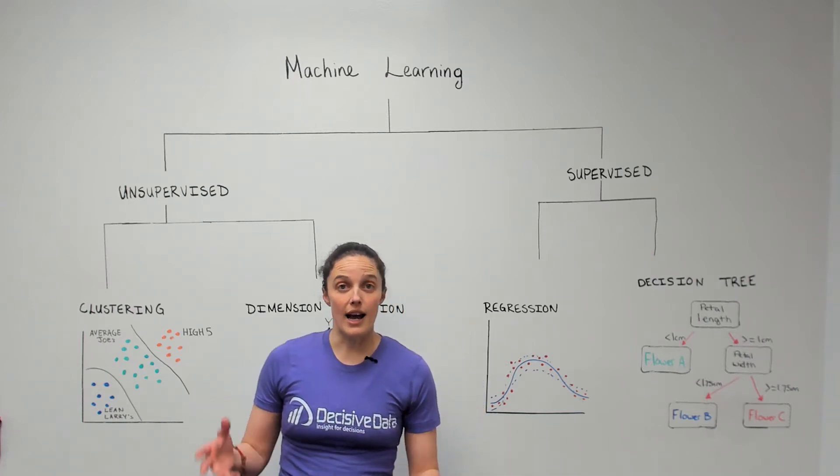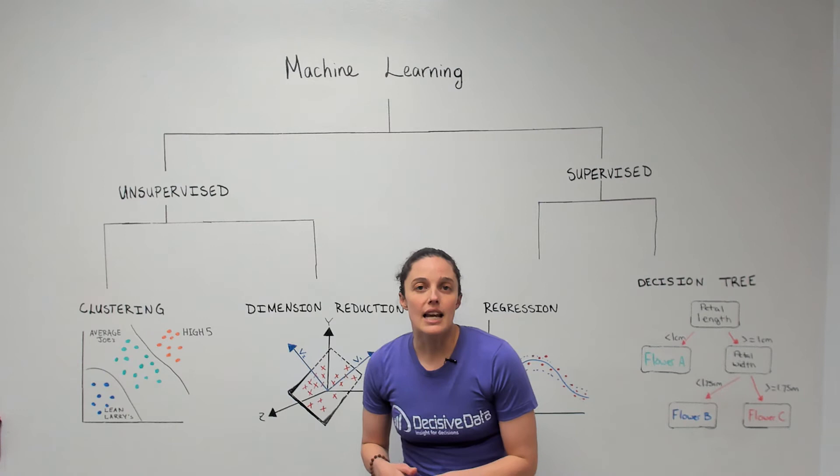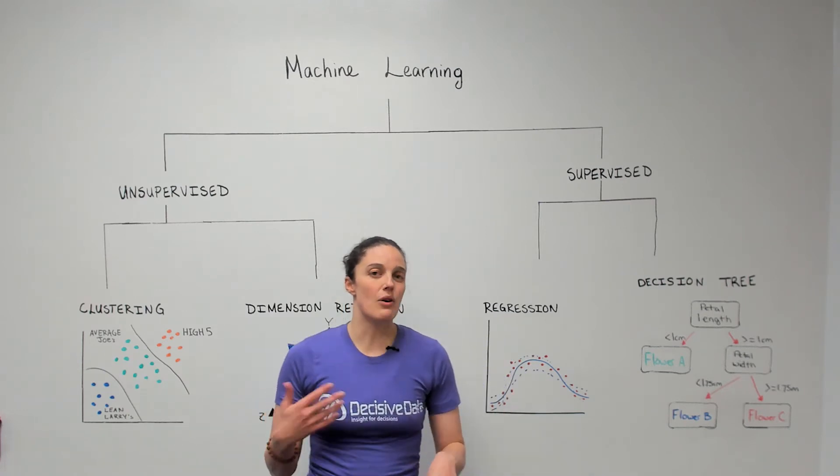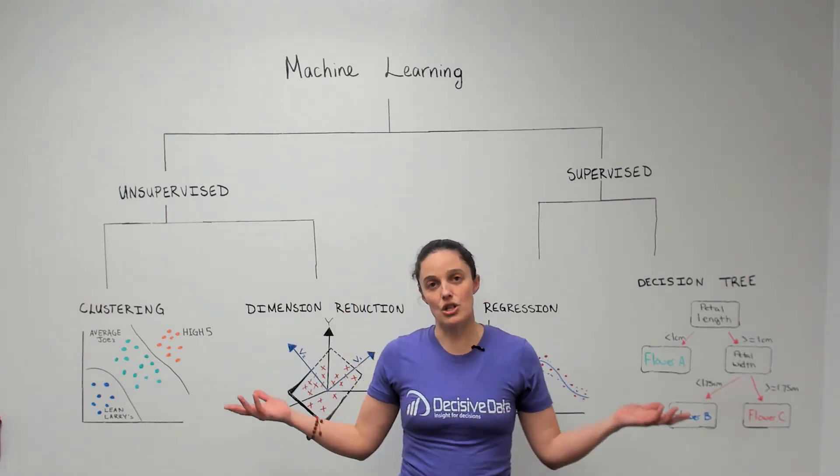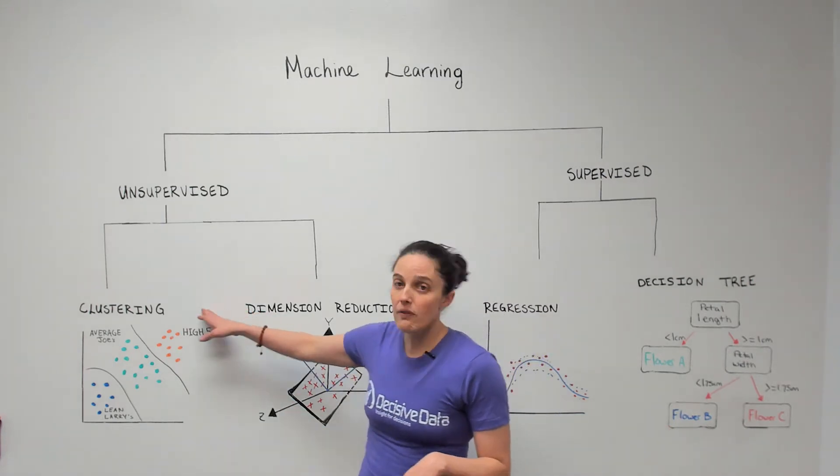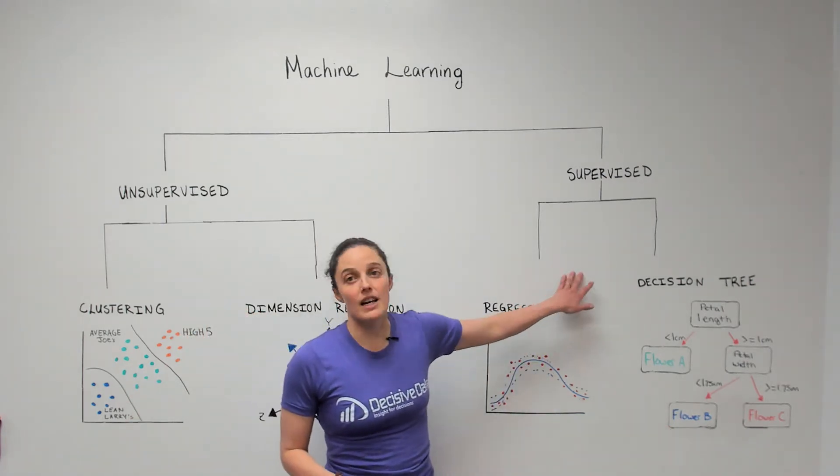It's a really big buzzword right now, it's all over the place. Today we're going to talk about how it applies to data science and really break it down into two general categories: unsupervised machine learning and supervised machine learning.